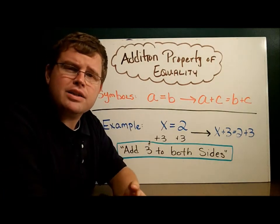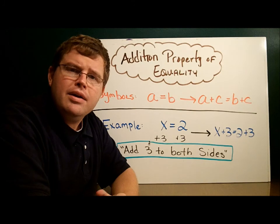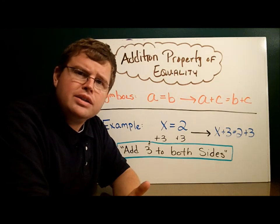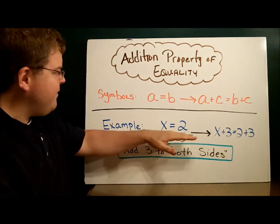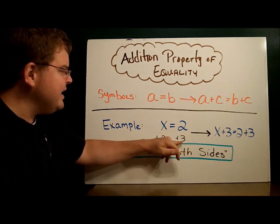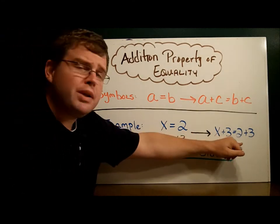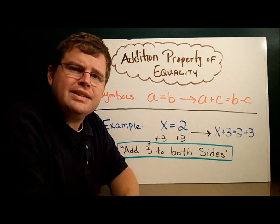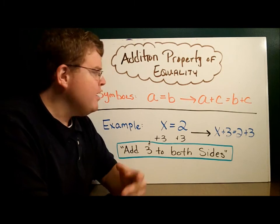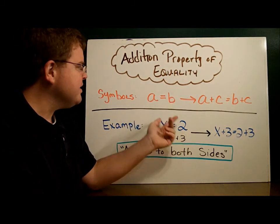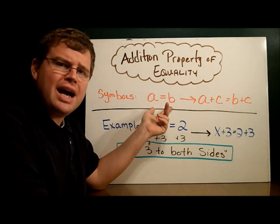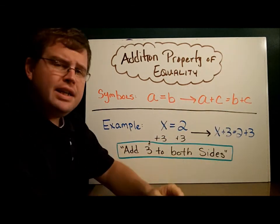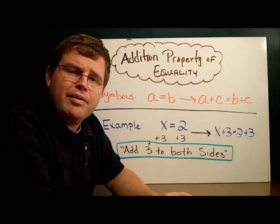The first property is the addition property of equality. This simply says you can add the same amount to both sides of an equation and it's still equal. For example, if x equals two, we can add three to each side: x plus three equals two plus three. In symbolic notation, if a equals b, then a plus c equals b plus c.